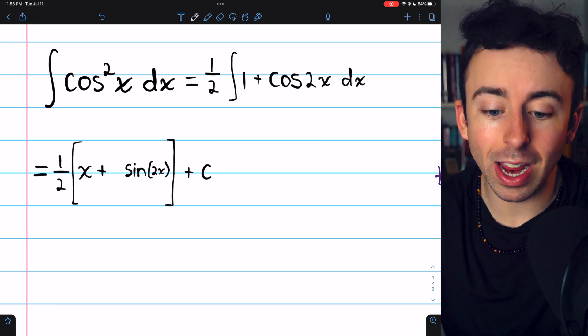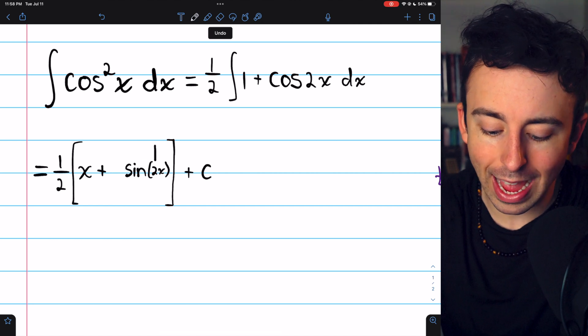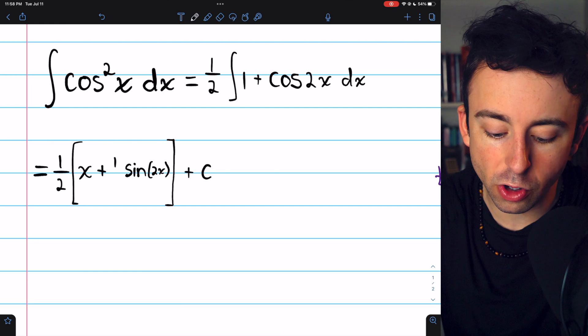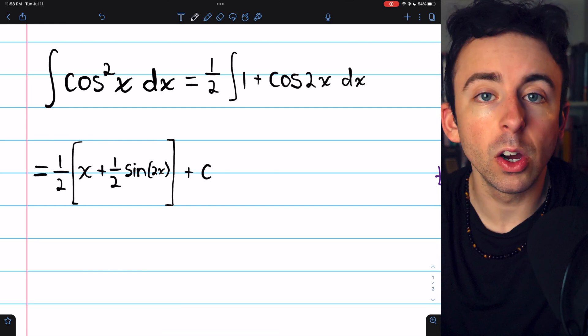But by the chain rule, if we took the derivative of this, we would get a factor of 2 as well. And we need to undo that by multiplying by 1 half.